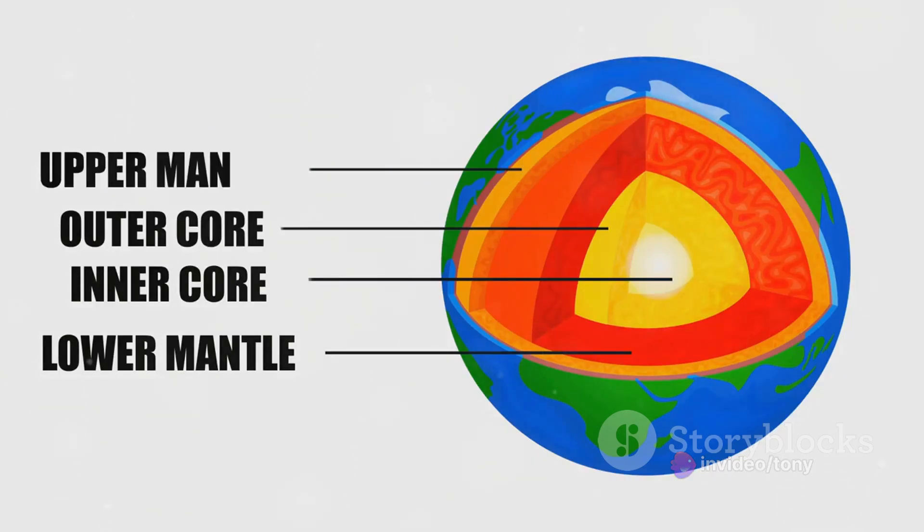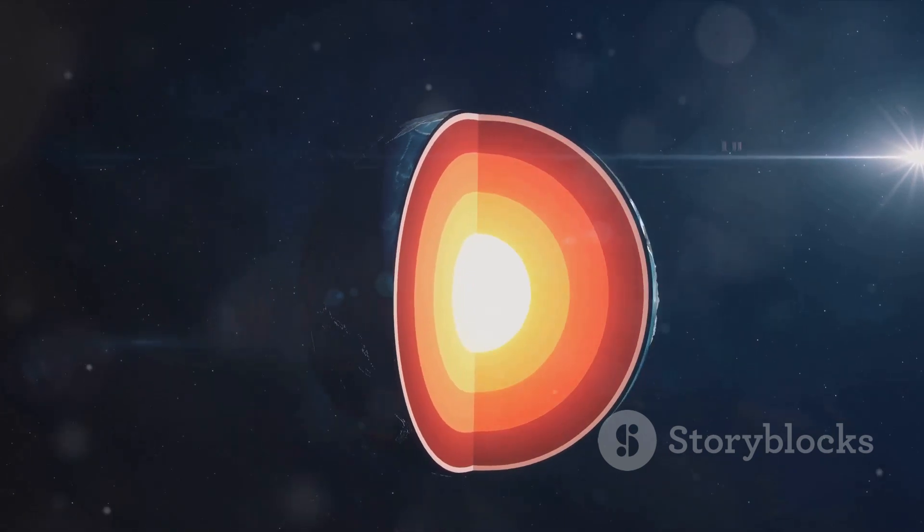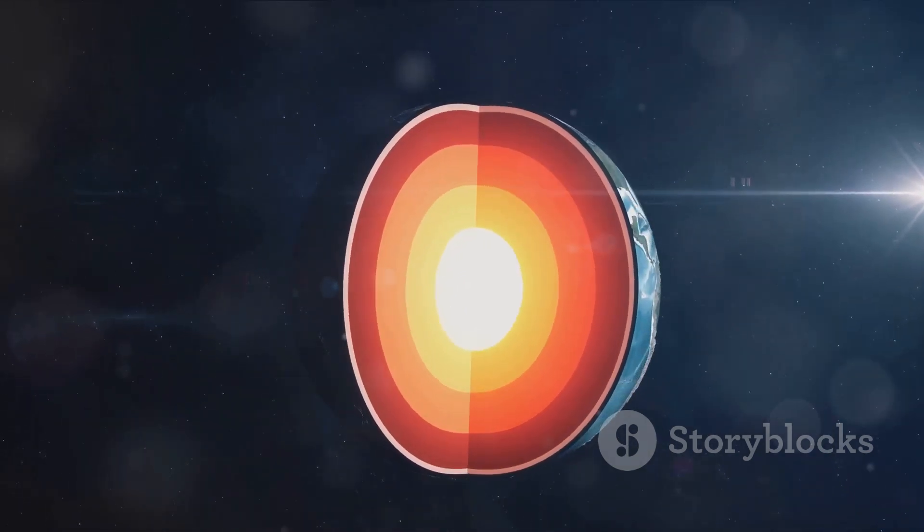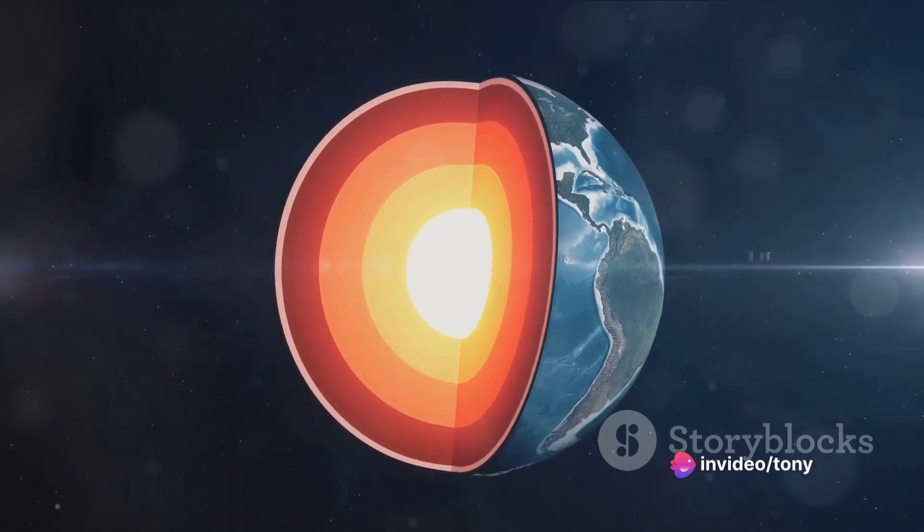These currents generate a magnetic field that extends far into space, enveloping our planet in an invisible shield. This shield protects us from harmful solar radiation, making life on Earth possible.